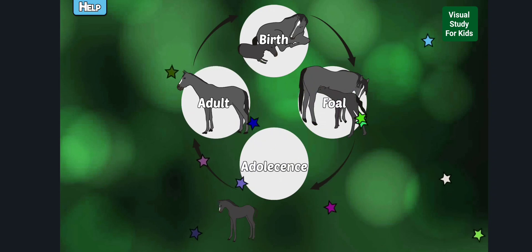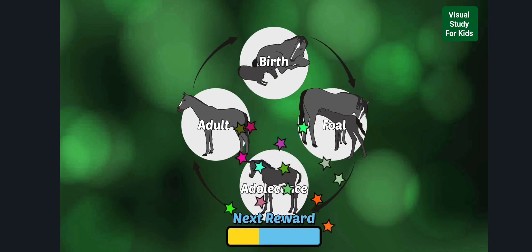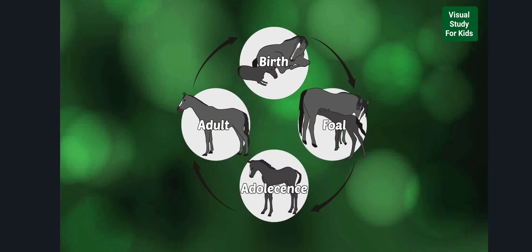Foals are young horses under one year old. Around one to four years of age, horses are called a filly for a female or a colt for a male.